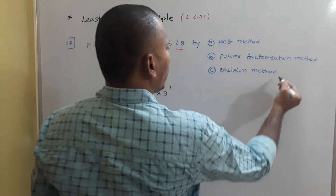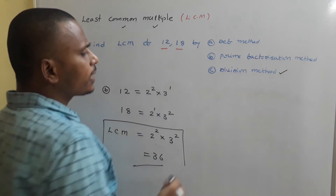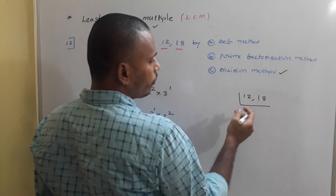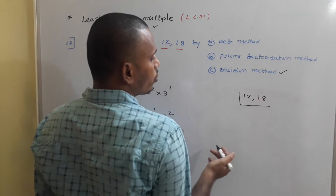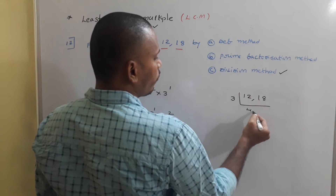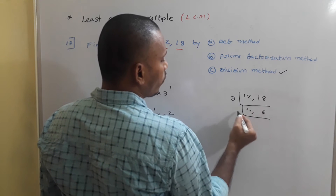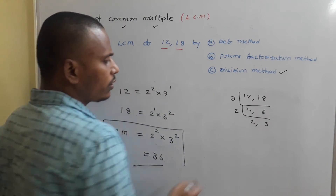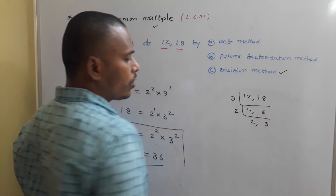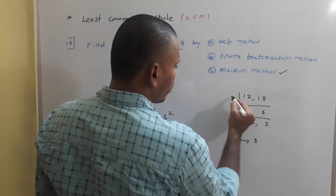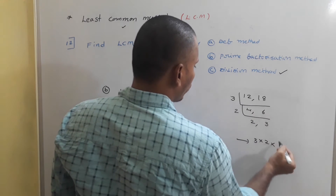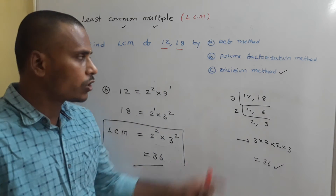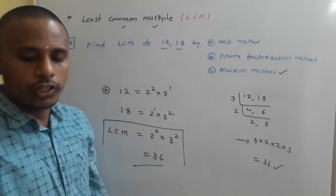Next is the division method or shortcut method for LCM of 12 and 18. We check each prime number that divides these numbers. Take 3: 3 divides 12 to give 4, and 3 divides 18 to give 6. Then take 2: 2 divides 4 to give 2, and 2 divides 6 to give 3. Now 2 and 3 share no common factor, so LCM = 3 × 2 × 2 × 3 = 36.